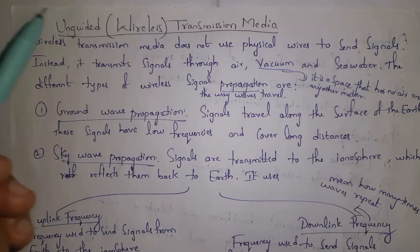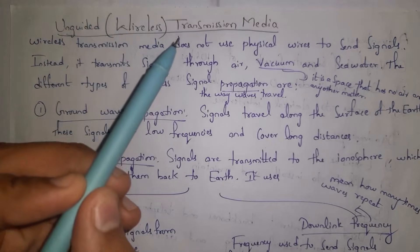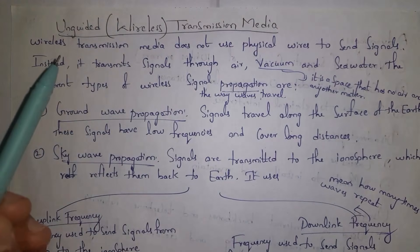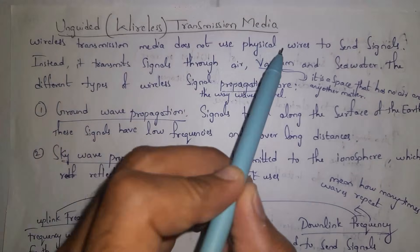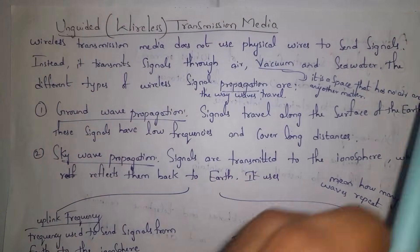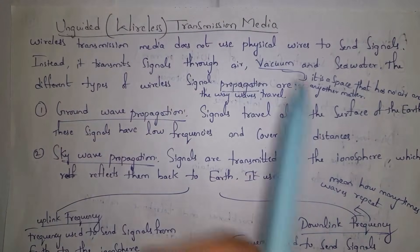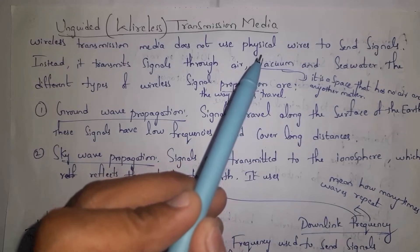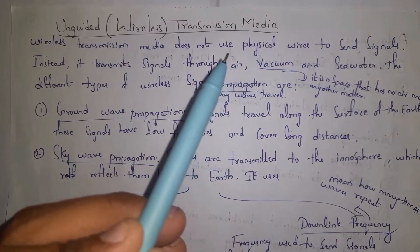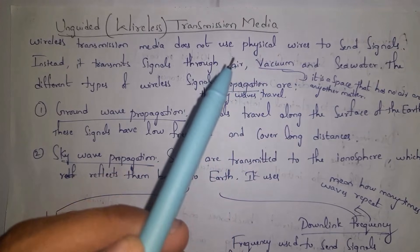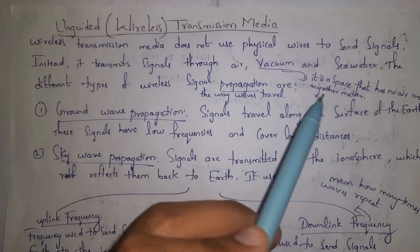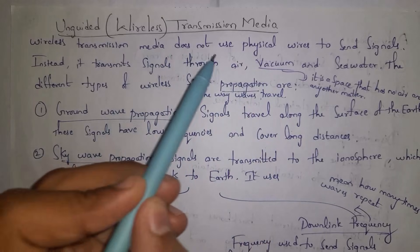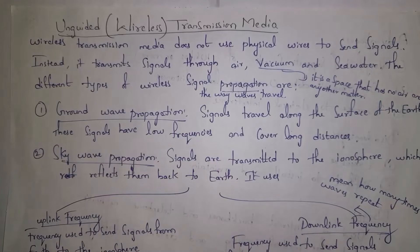Wireless transmission media does not use physical wires to send signals. Instead, it transmits signals through air, vacuum, or seawater. Vacuum is a space that contains nothing — no air or other particles. So data can be transferred using air, vacuum, or seawater in wireless transmission media.